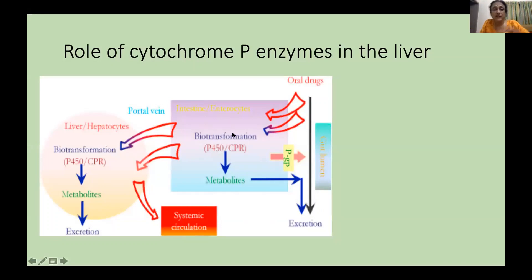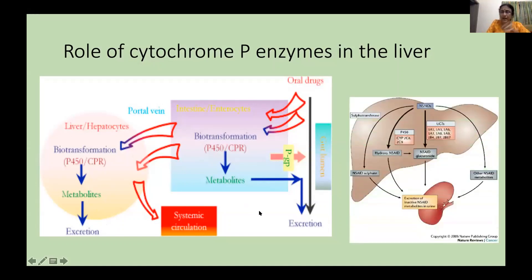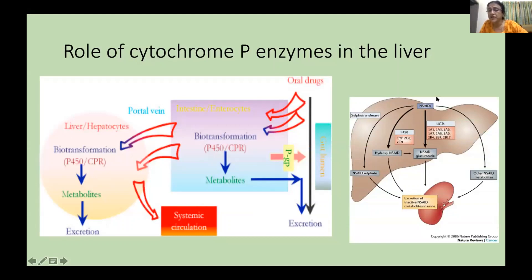The cytochrome P enzymes that detoxify or break down drugs are located in zone three of the liver. The drug reaching the intestine through the portal vein reaches the liver where it undergoes biotransformation. It can be broken down into an active drug which reaches the systemic circulation, while a portion gets excreted. A drug does not have to be broken down by either phase one or phase two exclusively — an NSAID, for example, undergoes both hydroxylation and glucuronidation.